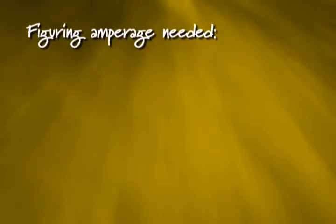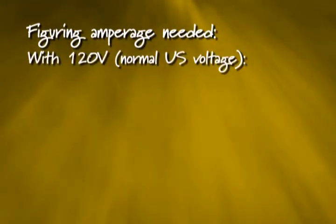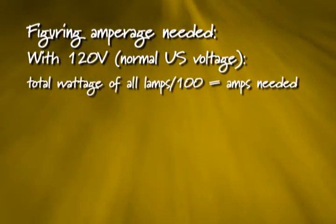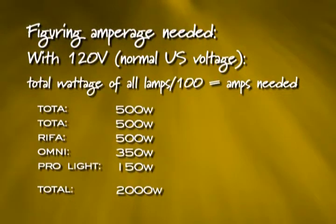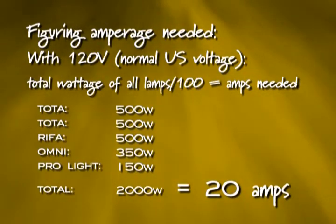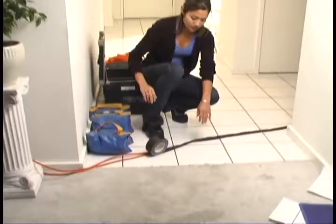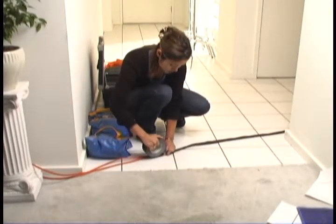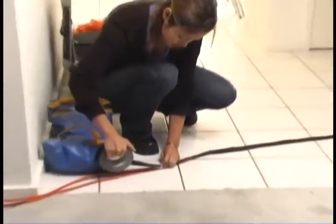If in the middle of your talent's best take the set goes completely dark — circuit breaker — this is a situation to be avoided. The formula is: amps equals watts divided by volts. With a 100 to 120 volt power supply like in the US, an easy rule is to add up the total wattage of your lights and divide by 100. This number should be half the amperage rating of the circuit breaker or less. So if you're using two TOTA lights at 500 watts each, a Refa at 500, a 350 watt Omni and a 150 watt Pro light, that's 2000 watts, which is about 20 amps. Since most circuit breakers are set to pop at 15 or 20 amps, this is way too much wattage to put on one circuit. You'll want to split the load up to at least three circuits. You can plug some of the lamps into a long, heavy duty industrial strength extension cord, and run it down the hall to another room on a separate circuit.